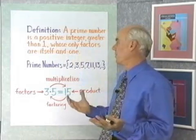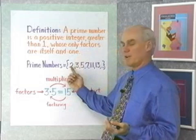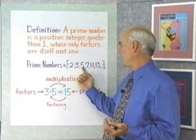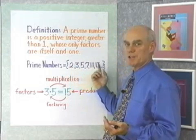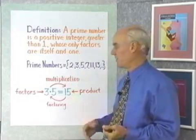So, a whole number greater than 1, whose only factors are itself and 1. The prime numbers are the set of numbers 2, 3, 5, 7, 11, 13, so on and so forth. All the numbers that have divisors of just themselves and 1 and no others.